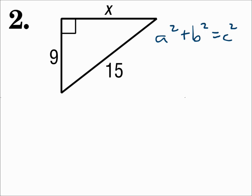Number two. We have a right triangle. The legs are 9 and x, and the hypotenuse is 15. So use the Pythagorean Theorem to find x. a can be 9, and b can be x, and c is 15. I could say x squared plus 9 squared equals 15 squared, because it doesn't matter which order you add. Just make sure the hypotenuse is always c.